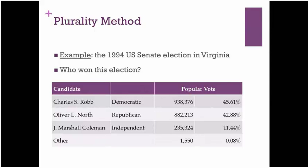What I want us to note here is that no candidate received a majority of the votes. Charles Robb received 45% and more, Oliver North almost 43%. But the third candidate, Coleman, received between 11 and 12%. Now, the way that election was decided was very simple — it really wasn't a close call at all. Namely, Robb won. Notice Robb won despite the fact that he did not win a majority. He had a plurality and not a majority.